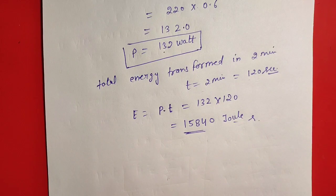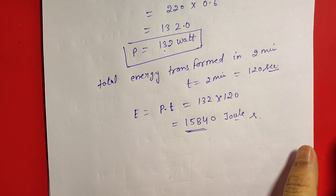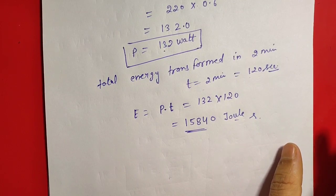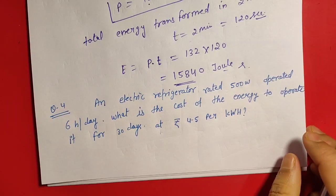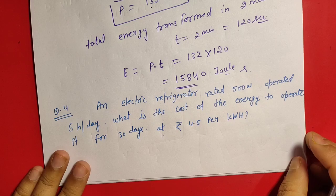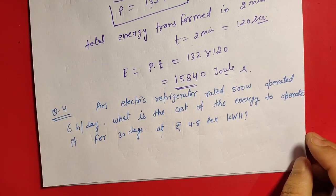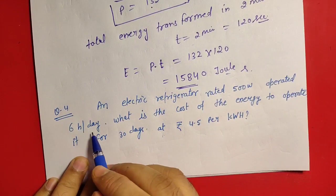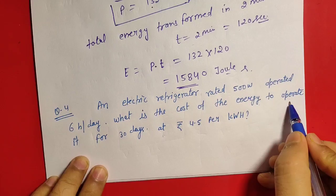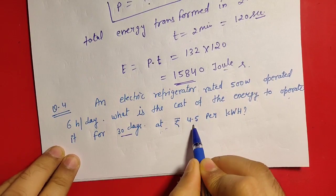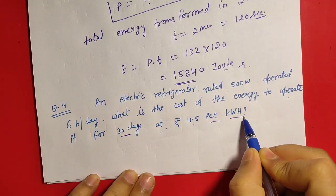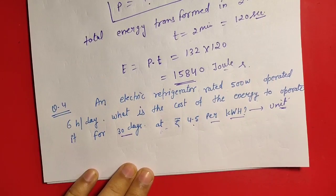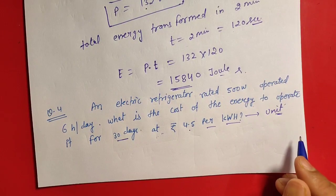So 2 minute, 15,840 Joule energy consume. Is it clear? Simple. No next question. Next question, question number 4, it is also based on electric power and energy consumption. An electric refrigerator rated 500 watt operates 6 hours per day. What is the cost of energy to operate it for 30 days at rupees 4.5 per kilowatt hours? 1 kilowatt hour equal to the unit, matlab jo electricity cost hai vo per unit ka 4.5 rupees hai.